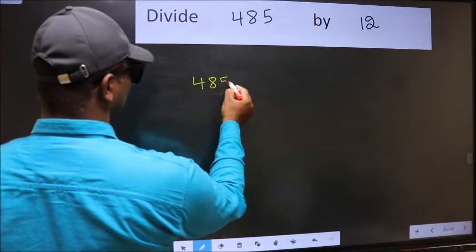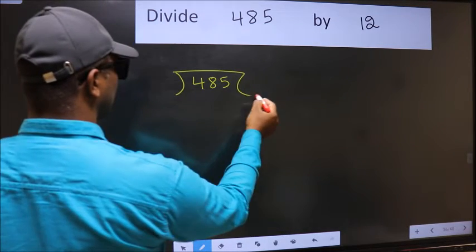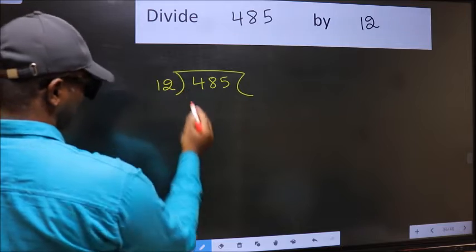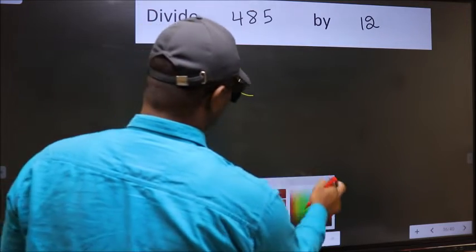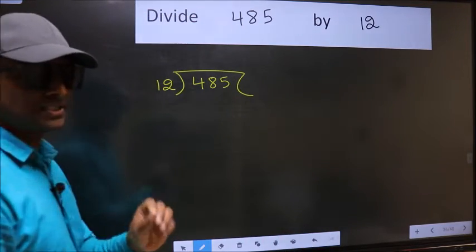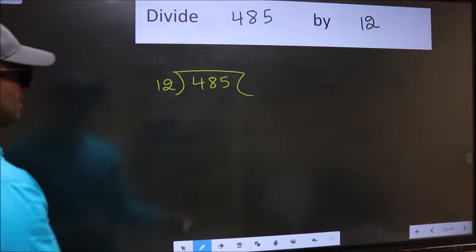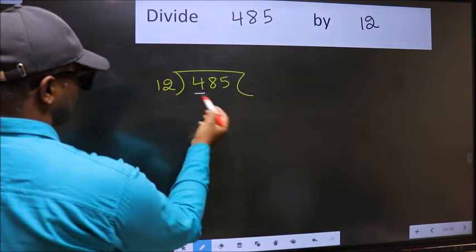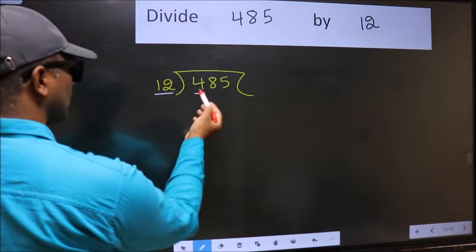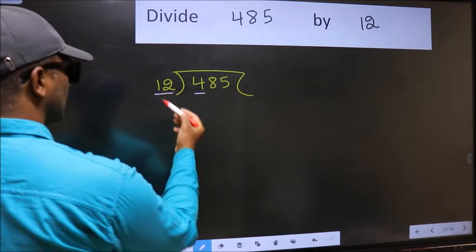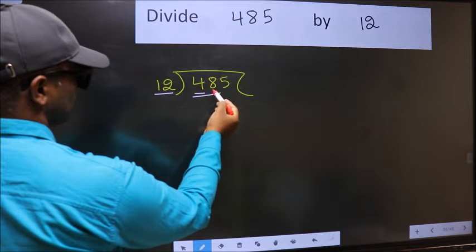485 and 12 here. This is your step 1. Next, here we have 4 and here 12. 4 is smaller than 12, so we should take 2 numbers: 48.